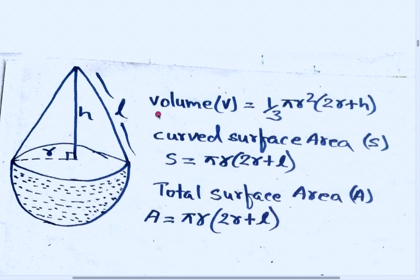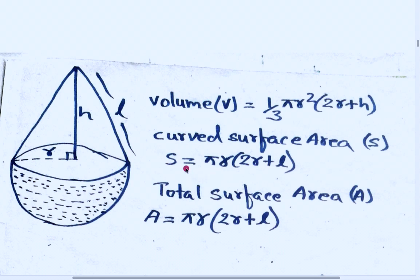To find the volume of this combined figure, the volume V is equal to one-third pi r squared times (2r + h). The curved surface area S is equal to pi r times (2r + l). Using these formulas we will find the curved surface area of this combined figure.